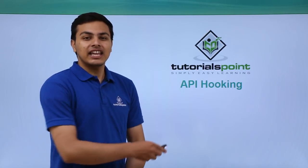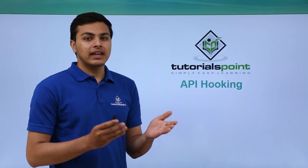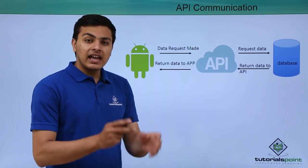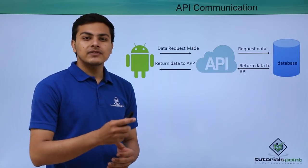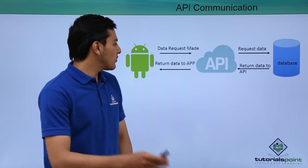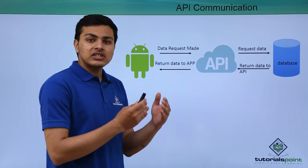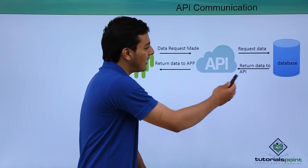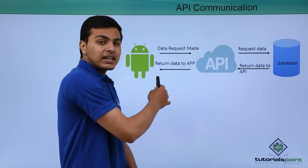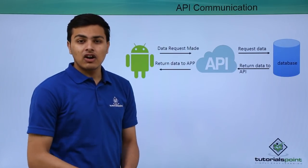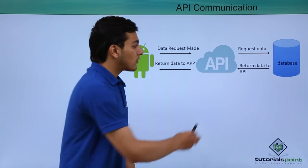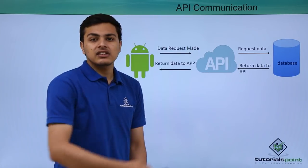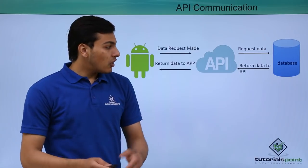This video will look at API hooking — what it is and how we can hook on a particular API. First, let's see what an API is and how it works in an Android application. API stands for Application Programmable Interface. With the help of an API, our application can request data from a remote database. The application makes an API call, requests data from the database, and once received, the API forwards that data to the application in the form of a JSON string.